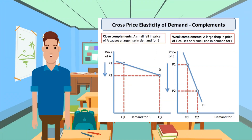Graphing XED for complements: for close complements, a small fall in the price of A causes a large rise in demand for B. For weak complements, a large drop in the price of E causes only a small rise in demand for F.